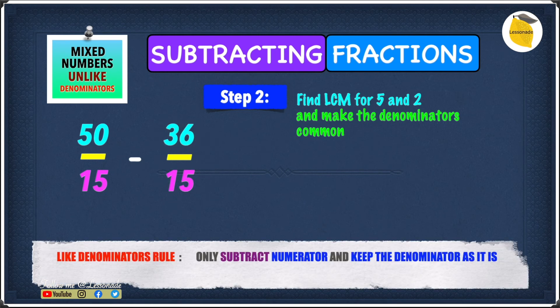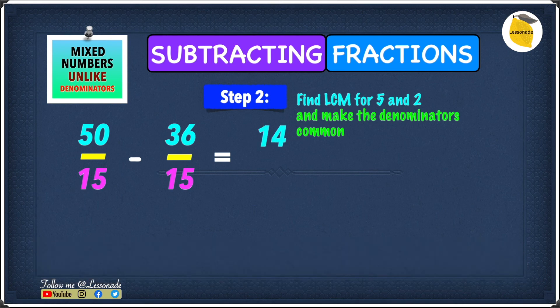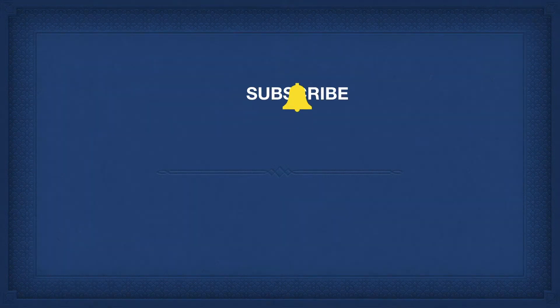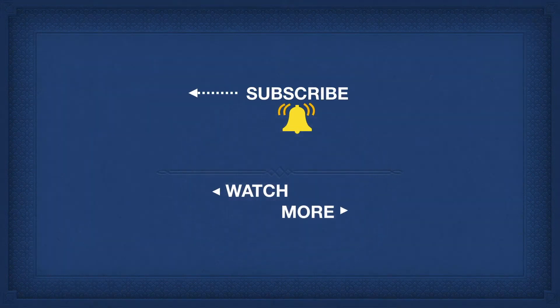We now have 50 over 15 minus 36 over 15. The answer is simple because it is now a like fraction — you only have to subtract the numerators and leave the denominator as it is. 50 minus 36 gives you 14, and the denominator stays as 15. So our answer to this question is 14 over 15.